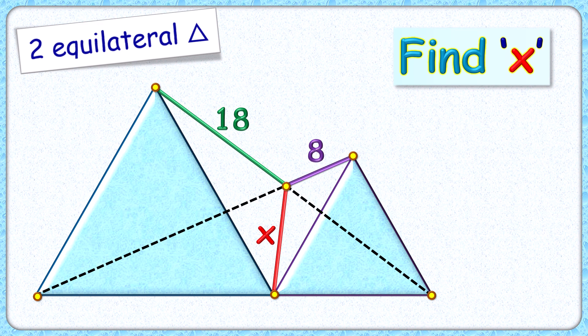Welcome everyone to this interesting question. Given to us are two equilateral triangles with their bases in a straight line. The vertices of these two triangles are joined as shown in the figure. The length of this green and purple line segment is 18 and 8 cm each.